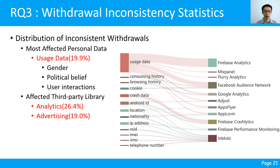We also analyzed the affected privacy data and third-party libraries. The most affected privacy data type is user data, accounting for 19.9%, which can be used to track user behaviors and preferences such as gender, political beliefs, and user interactions. We discovered that withdrawal inconsistencies primarily involve analytics libraries such as Firebase Analytics and advertising libraries such as IronMobile, respectively accounting for 26.4% and 19%. In summary, withdrawal inconsistencies cause third-party libraries to process user privacy data without user consent, resulting in ongoing data collection and potentially violating relevant privacy regulations.